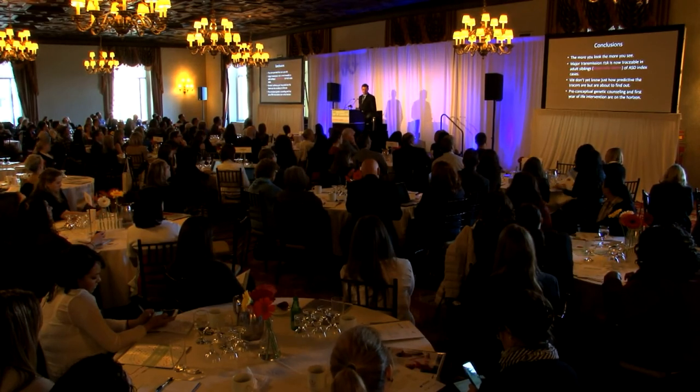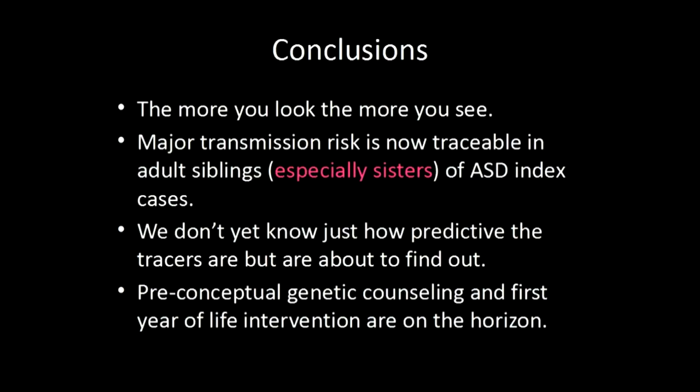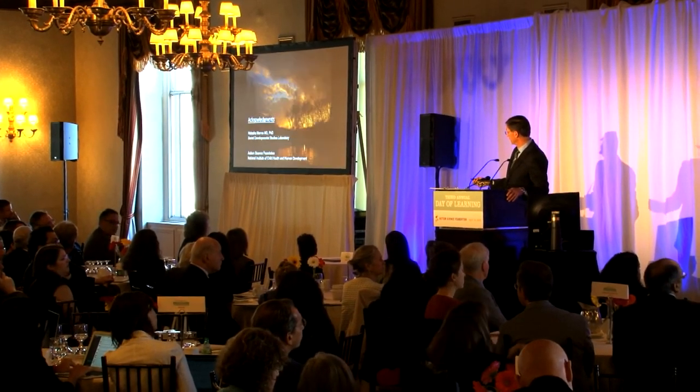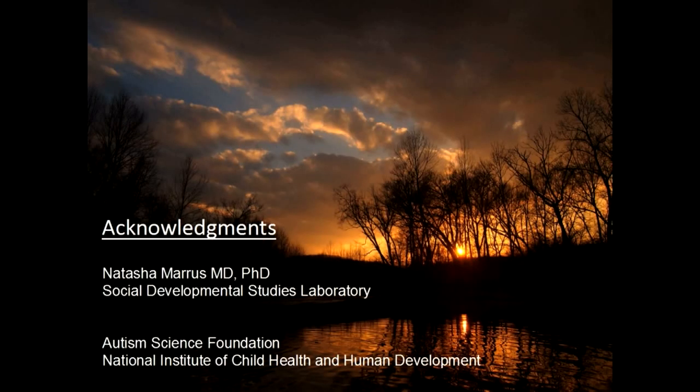Conclusions: the more you look, the more you see. Major transmission risk is now traceable in the adult siblings of ASD index cases, especially in the sisters. We don't yet know just how predictive these tracers are, but we're about to find out and will disseminate results as soon as possible. Preconceptual genetic counseling and first-year-of-life intervention are on the horizon. I acknowledge Dr. Natasha Maris, the Autism Science Foundation for funding this research, and the National Institute of Child Health and Human Development, which has now funded a five-year federal grant to extend this project. Thank you very much.